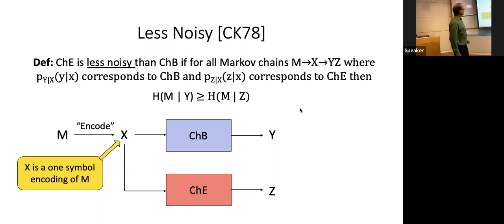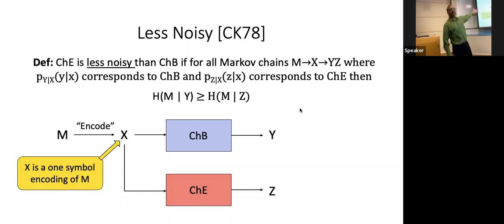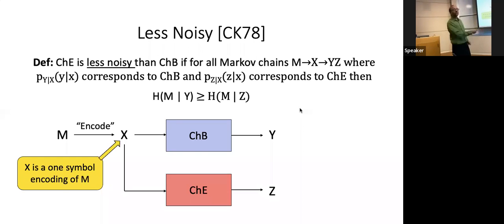The definition of 'less noisy' is what you'd expect: Eve's channel is less noisy than Bob's channel if the entropy of Alice's message conditioned on Bob's information is greater than the entropy of the message conditioned on Eve's information. That means Bob is more unsure about the message. In that situation we're out of luck — that's what Csiszár and Körner proved back in 1978. It makes sense and it was proven back then.